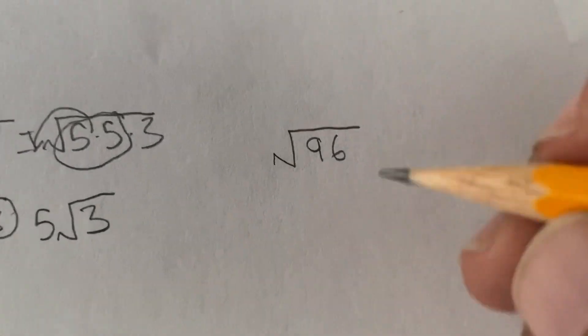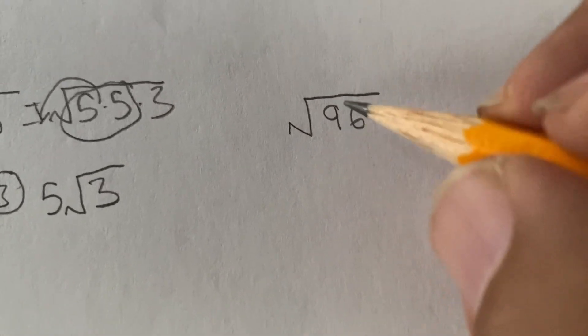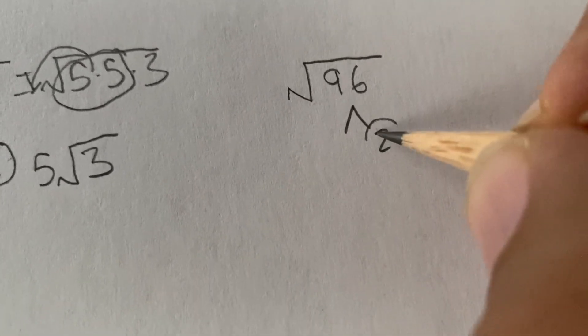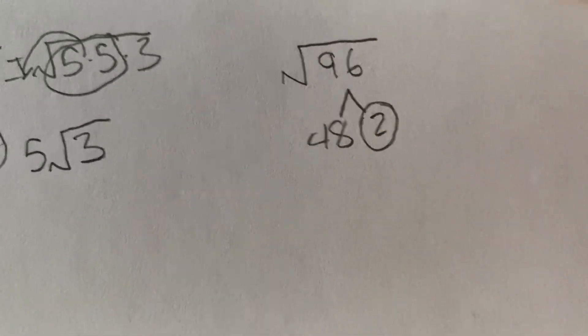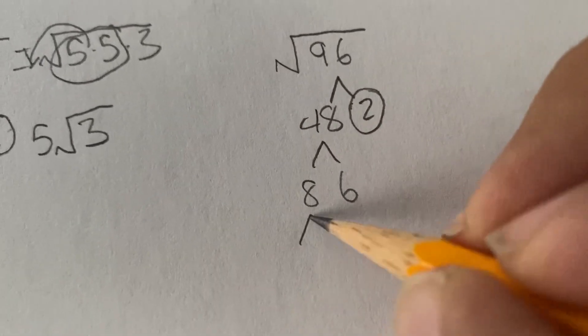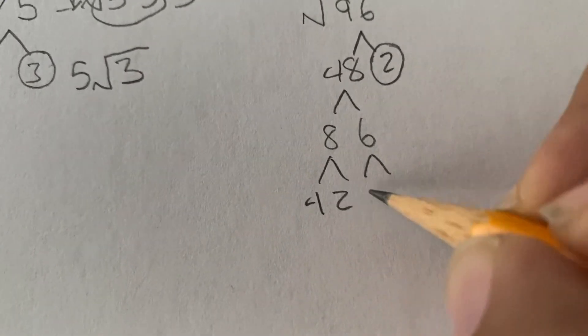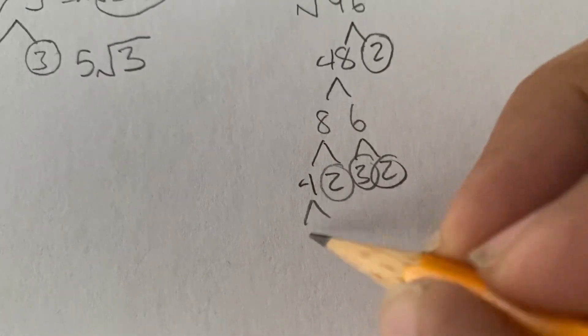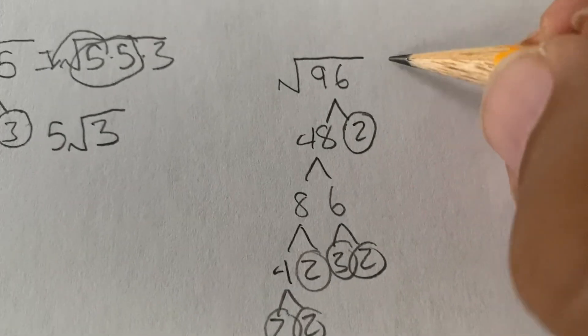Now we're doing 96. Let's think of numbers that multiply to make 96. So I'd say 2 times 48. Then you could do 8 times 6. Both of those split. Then we can do 4 times 2 and 3 times 2. And then 2 times 2. And now we have all of them. There's a lot of prime numbers.